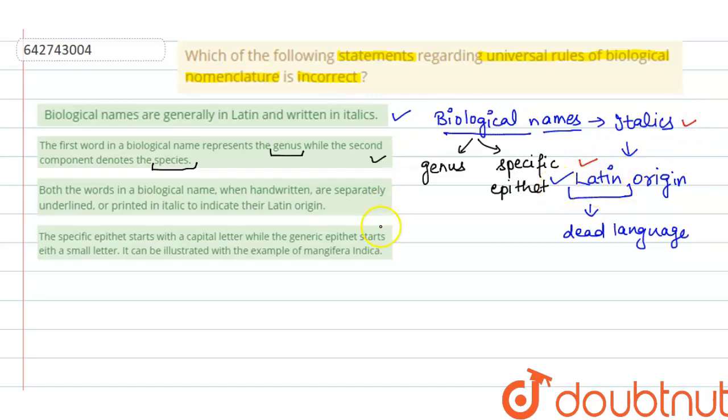But when handwritten, suppose I write the biological name of mango, that is Mangifera indica, the rule says that the first word is genus and the second one is indica which is the species. So when handwritten we cannot write in italics, so what we will do is we will separately underline both of them. So this is also correct.